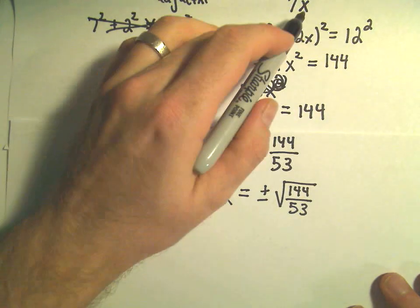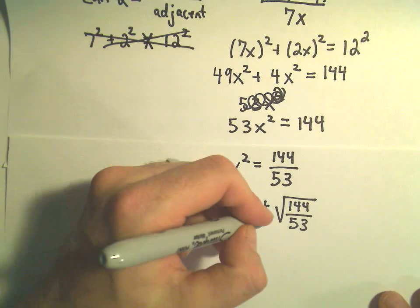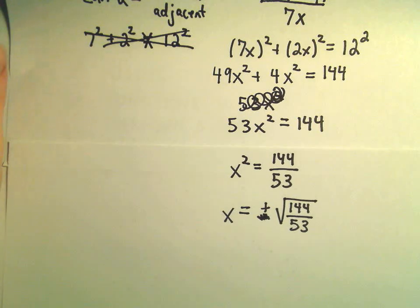But, again, in this case, x, you know, we're talking about lengths of triangles, so we're going to have to use the positive one. All right, well, now we've pretty much got everything that we need.